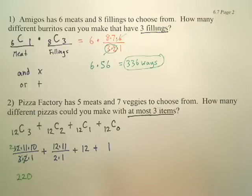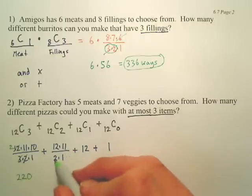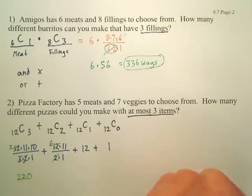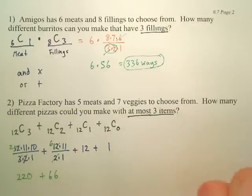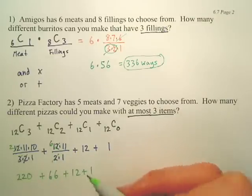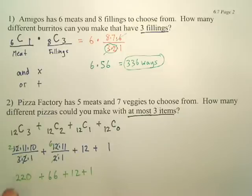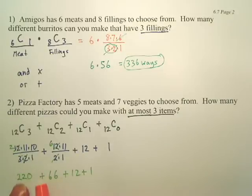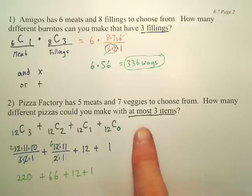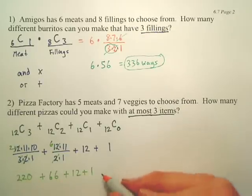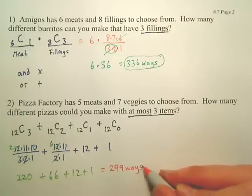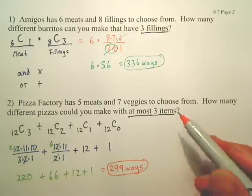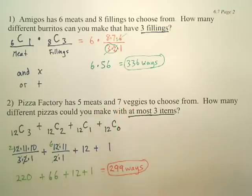There are a lot more ways to make a three-item pizza than two-item, one-item, or no-item. But for at most three items, you add up all of those. So your answer would be 220 plus 66 plus 12 plus 1 — 299 different ways to make an at-most-three-item pizza if this information were true for Pizza Factory.